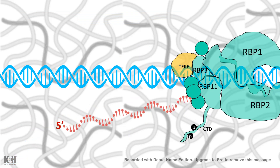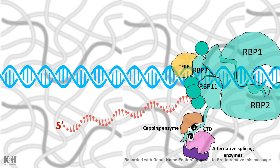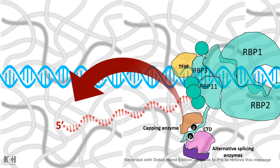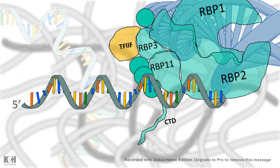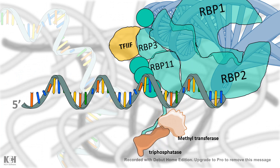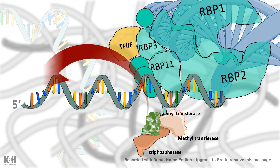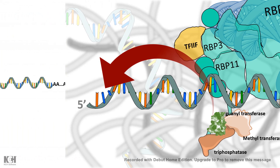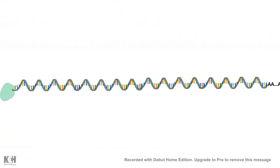The mRNA hanging out of the RNA polymerase is eventually treated by several enzymes such as alternative splicing enzymes, capping enzymes, and others, and would be further processed before transcription is even finished. Several enzymes such as methyl transferases, triphosphatase, and guanyl transferase form a 5' cap.